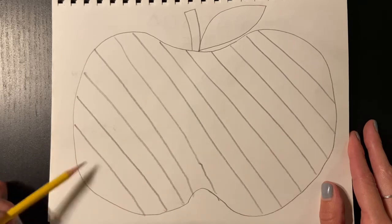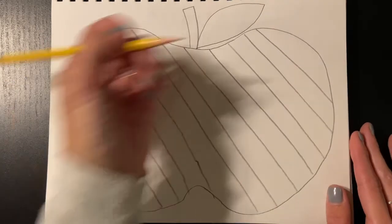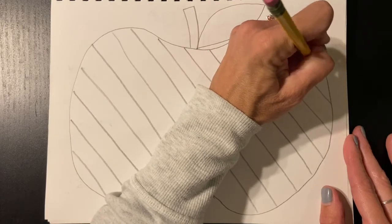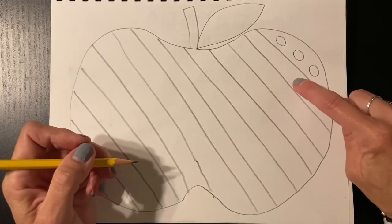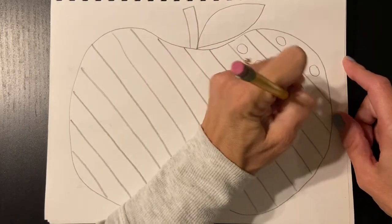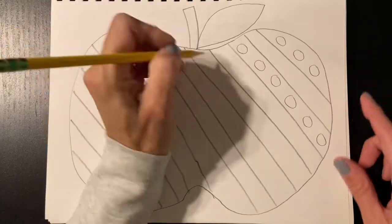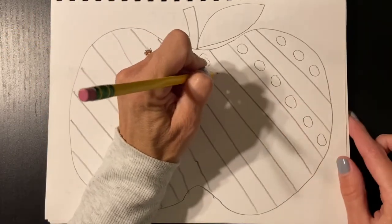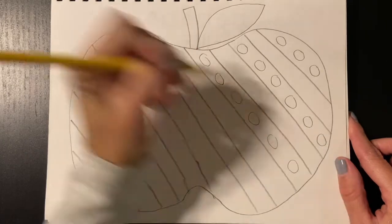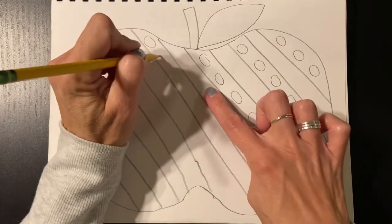But then I might make it a little bit fancier by putting some shapes. I'm going to do some circles, and I think I'll do circles in every other one. So I think I'll skip this one and then do some circles in this one. This is just my idea, boys and girls—you can come up with any kind of pattern for your apple.